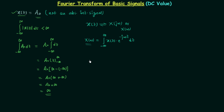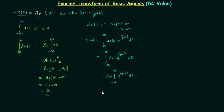Let's understand what goes wrong when we use this formula. We substitute x(t) equal to A0 and try to calculate the Fourier transform. A0 is a constant, so we have A0 times the integral from minus infinity to infinity of e to the power minus jωt dt. The result is A0 times e to the power minus jωt divided by minus jω, evaluated from minus infinity to plus infinity.